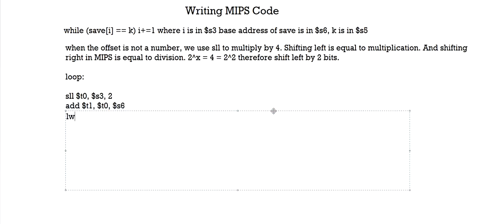Now for loading — I'm going to load it into register T2 with an offset of zero and T1 as the base. Why zero? Because we've already carried out our multiplication and our addition. I don't need to add anything else here. Before, when I put something in the offset, it meant adding that value with the base register. But since I've already done my addition separately, I just need to load the memory address into a register.